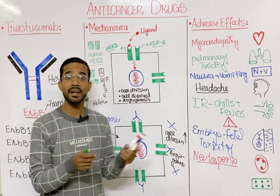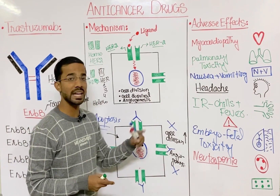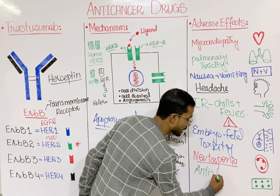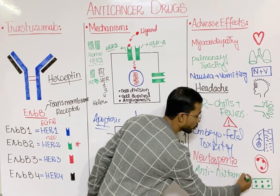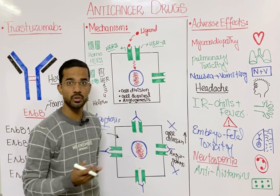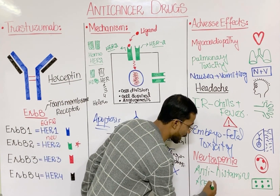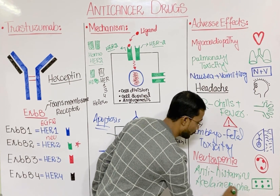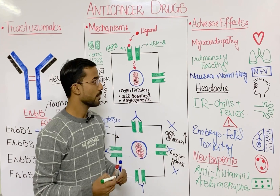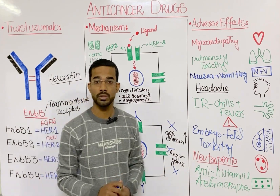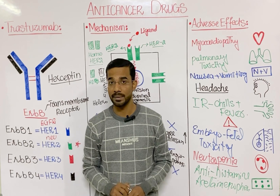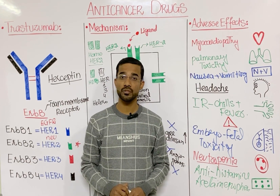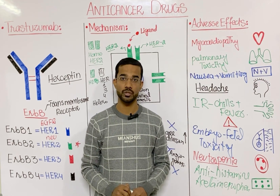Pre-medications before taking trastuzumab include antihistamines to reduce allergy-related reactions, and acetaminophen for fever. These are the important precautions related to trastuzumab, also known as Herceptin, which is a monoclonal antibody. If you have any questions, you may ask in the comment section. Thank you so much.